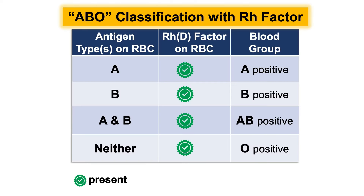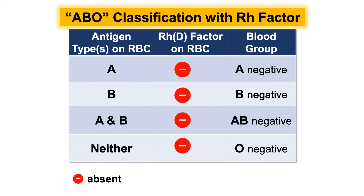If the RH factor is present, the blood type is RH positive, resulting in A positive, B positive, AB positive, or O positive. Conversely, if the RH factor is absent, the blood type is RH negative, resulting in A negative, B negative, AB negative, or O negative.